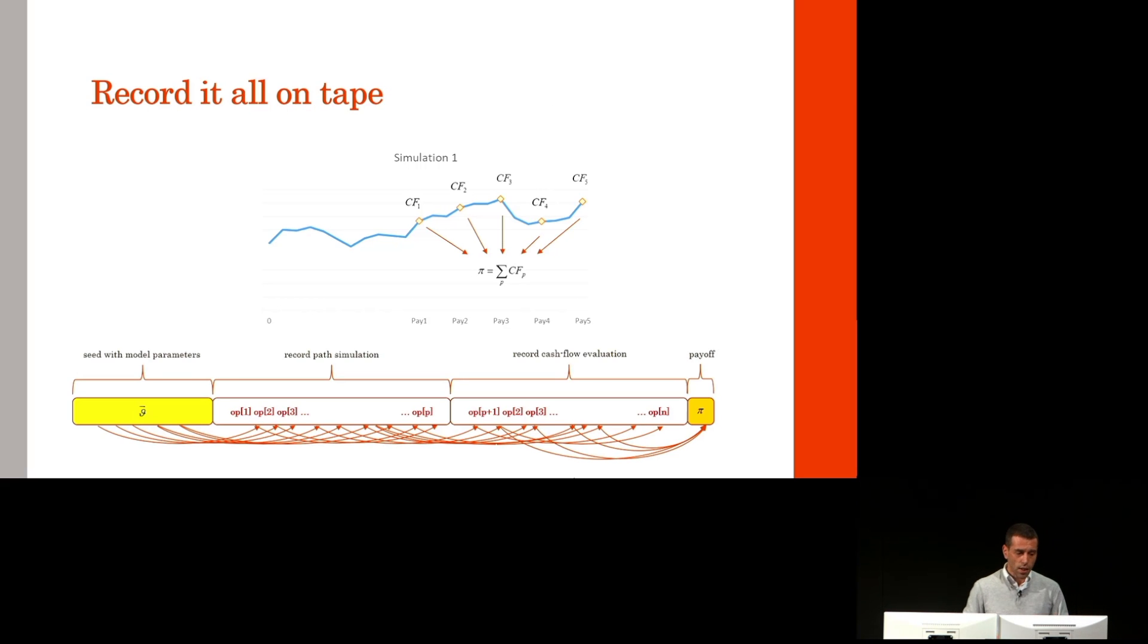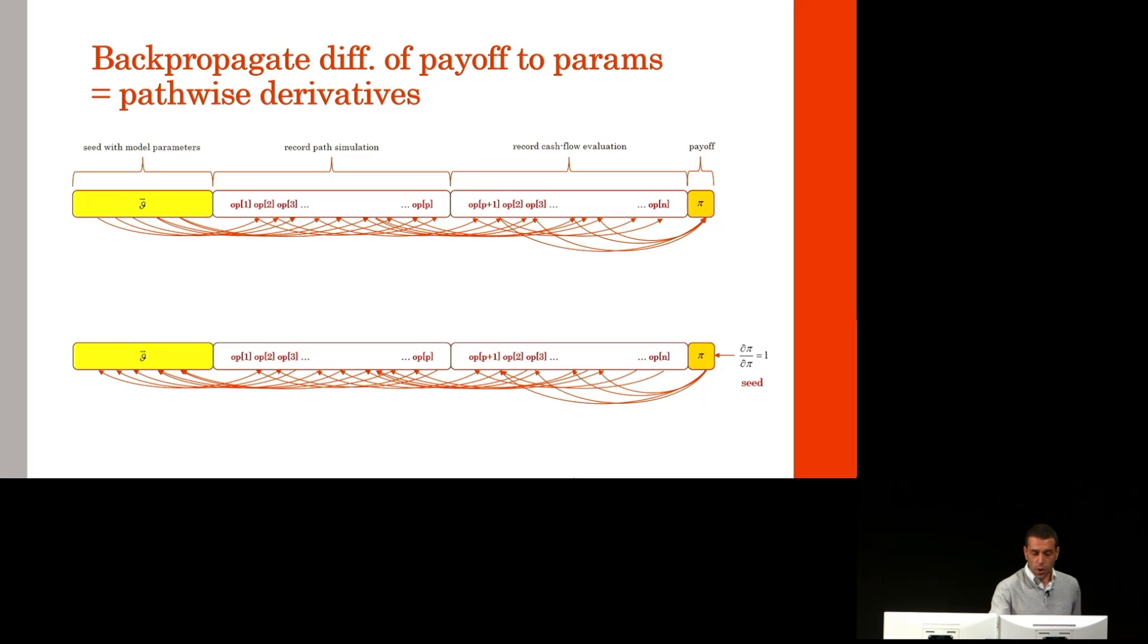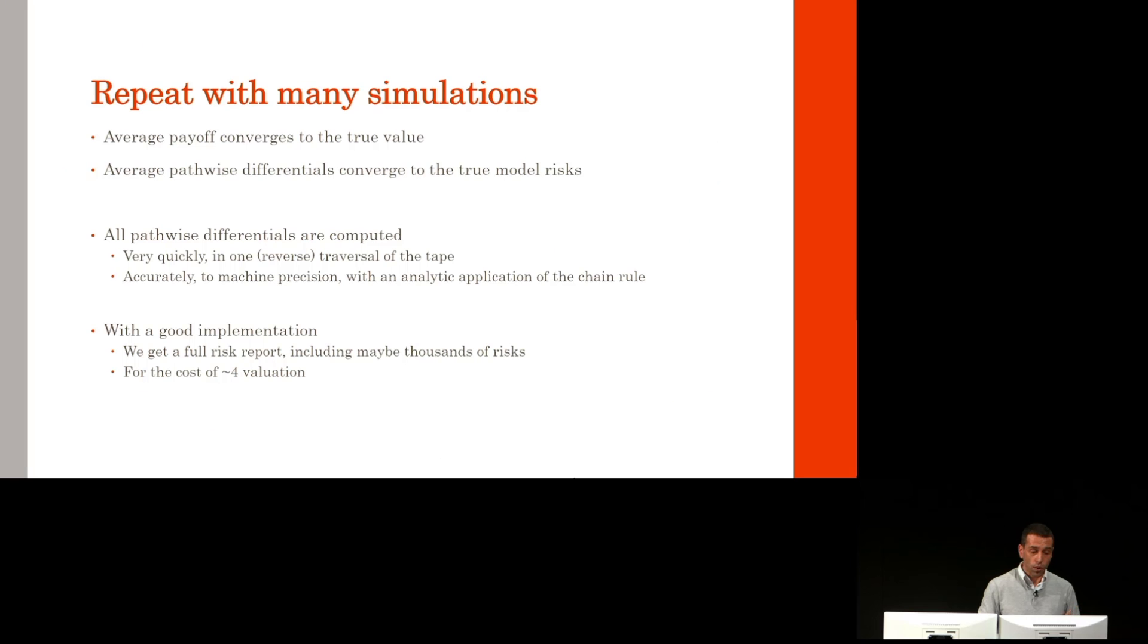This is very classic, but now we record all of it on tape. Seed with the model parameters, record the path simulation, the evaluation of the cash flow, and the accumulation of the payoff. Now we can backpropagate to get the differentials of the payoff with respect to all the parameters. These are called pathwise derivatives. Seed with the derivative of the payoff to itself, which is obviously one. Apply the now familiar adjoint equation right to left, and get all the pathwise derivatives in one single traversal. Repeat with many simulations. The average payoff converges to the true value, of course, but the average pathwise differentials also converge to the true model risks. All these pathwise differentials are calculated very quickly in one traversal of a tape and accurately to machine precision with an analytic application of the chain rule.